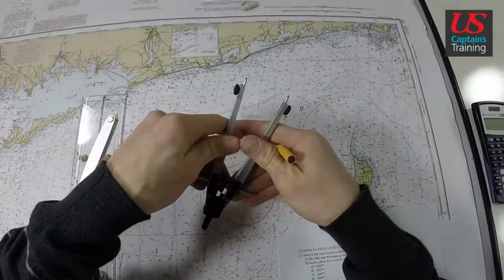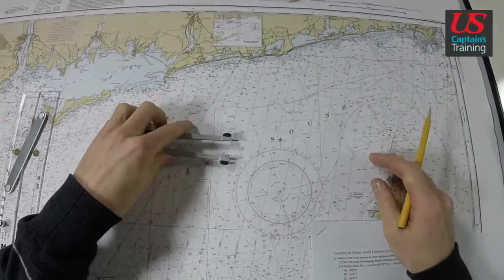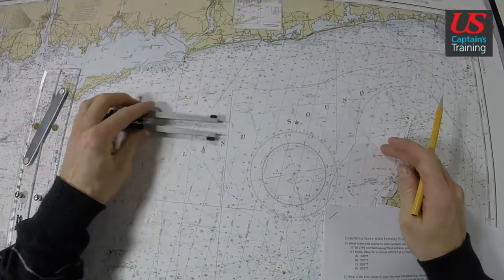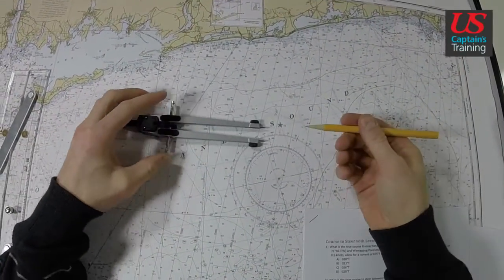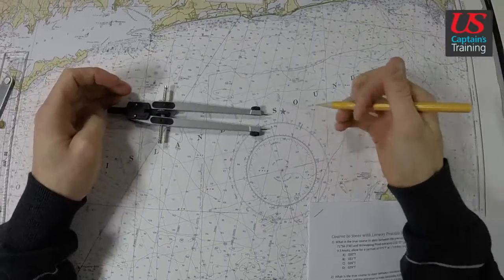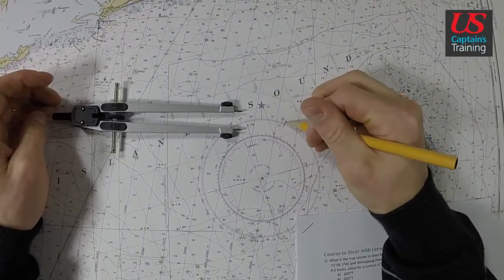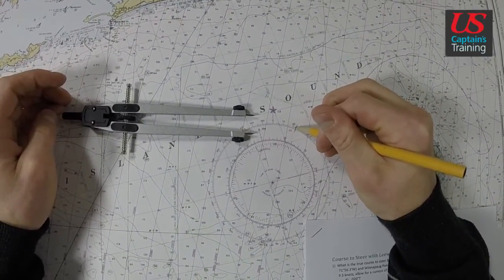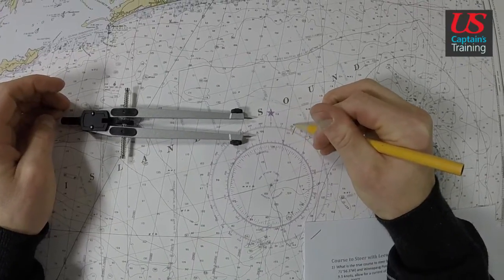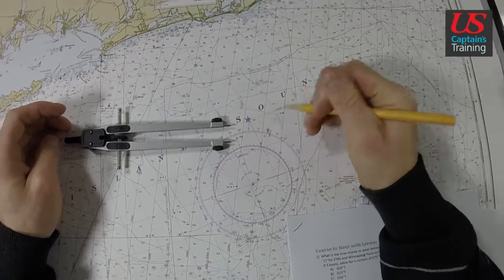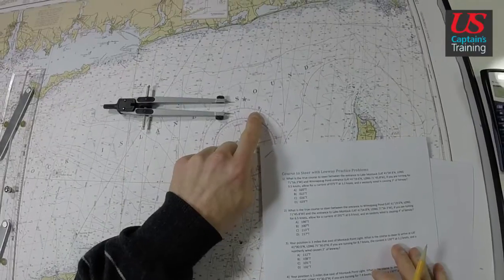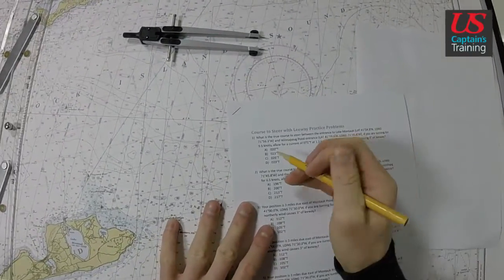So I'm going to make my dividers into the wind—it's just a habit that I have. So the wind's coming this way. We must correct into a westerly wind. So we're at 23, we say minus 3 is 20. So 20 degrees true is our course to steer. And there we are.